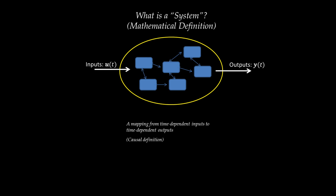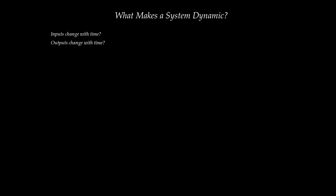A system from a mathematical and causal perspective is a mapping between inputs and outputs. Now that we've defined a system, the next question is: what makes a system dynamic? I'm going to take some things you immediately think about when you hear the word 'dynamic' and question them. When someone is told that a system is dynamic and is a mapping from inputs to outputs, they might ask: does it mean the inputs change with time, or the outputs change with time?